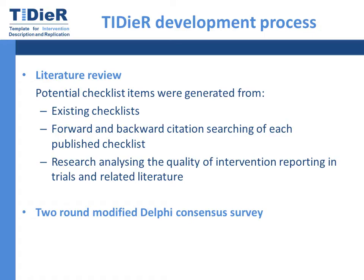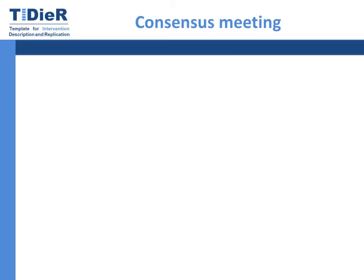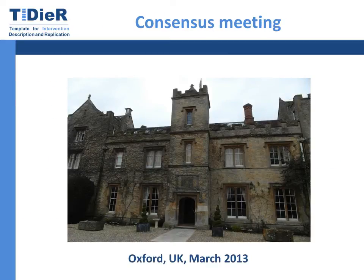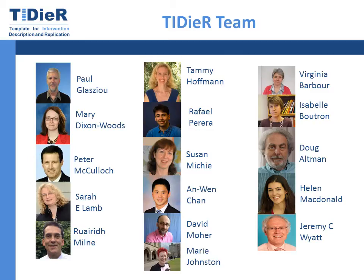To develop TIDIA, we followed a three-step process. We began by conducting a literature review, and from this generated a list of 34 potential items. We then conducted a two-round modified Delphi consensus survey of people who represented a broad range of expertise and stakeholders. The TIDIA team then met for a two-day consensus meeting in Oxford in March 2013, where the results of the Delphi survey were presented and discussed, and the final checklist items and their wording were debated and decided.